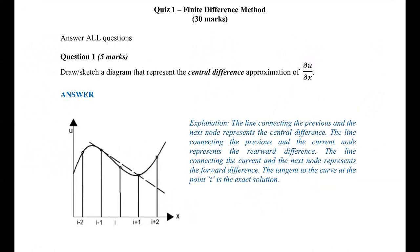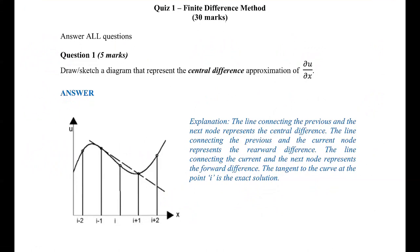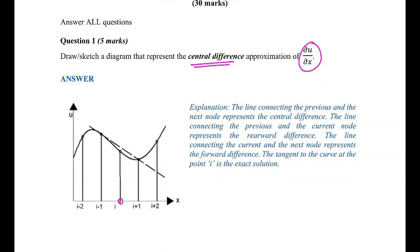The first question asked you to draw or sketch a diagram that represents the central difference approximation for du/dx. As you understand by now, du/dx refers to the slope. You need to draw a graph showing where your starting point I is, then to the left we have I minus 1, I minus 2, and on the right side I plus 1 and I plus 2.